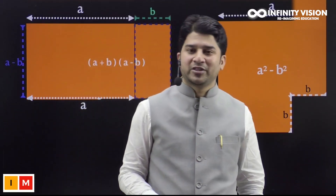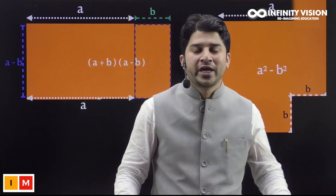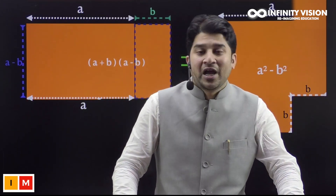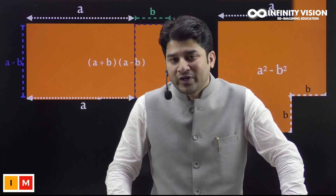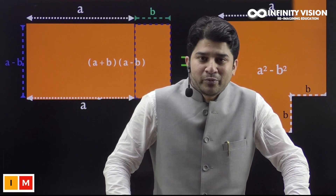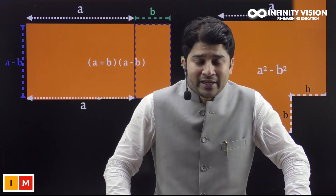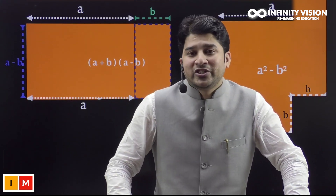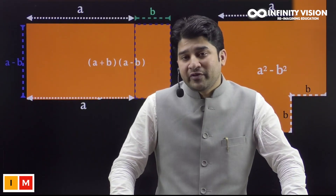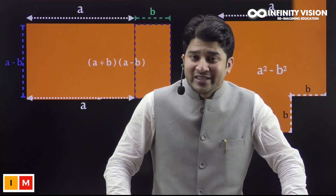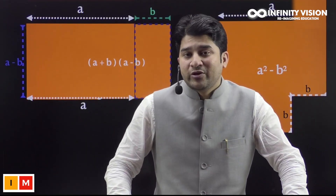So if anybody asks you what is a² - b², you are going to say it can be factored into (a + b)(a - b). I hope you understood the idea of how visually we proved this amazing identity, which has a lot of great applications in mathematics. And if you remember our squaring video, we actually used this identity to square numbers very quickly.